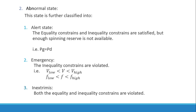The next state is the emergency state. In the emergency state, the inequality constraints are violated — we have either under-voltage, over-voltage, under-frequency, or over-frequency. The in-extremis state is the condition where both equality and inequality constraints are violated.